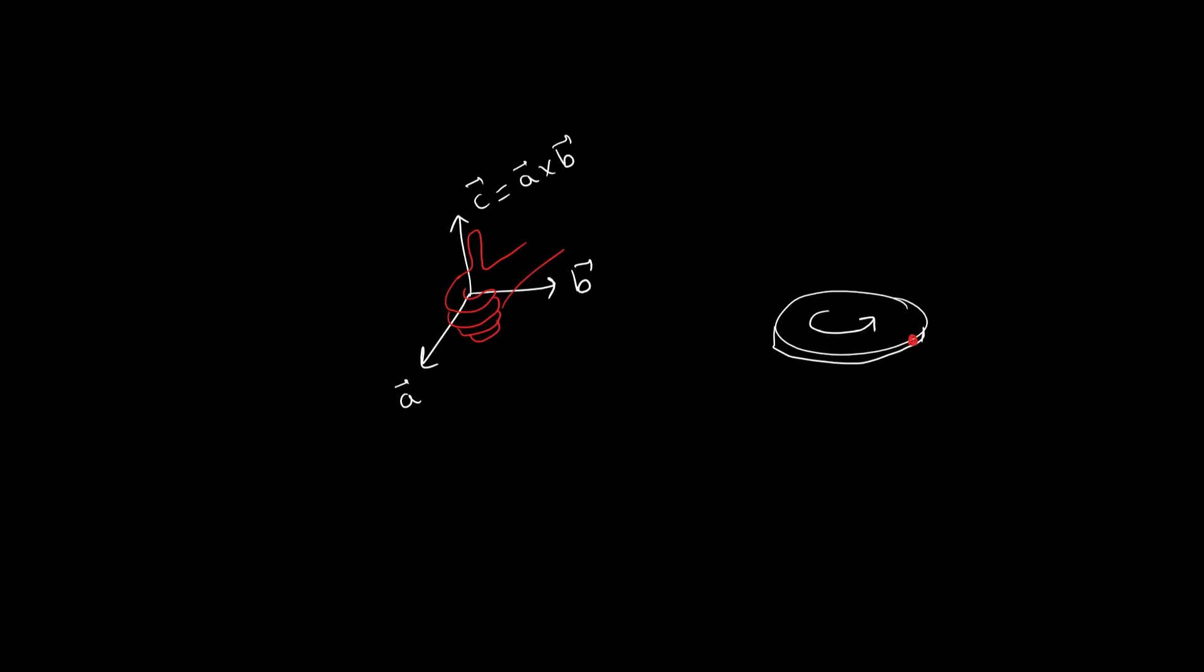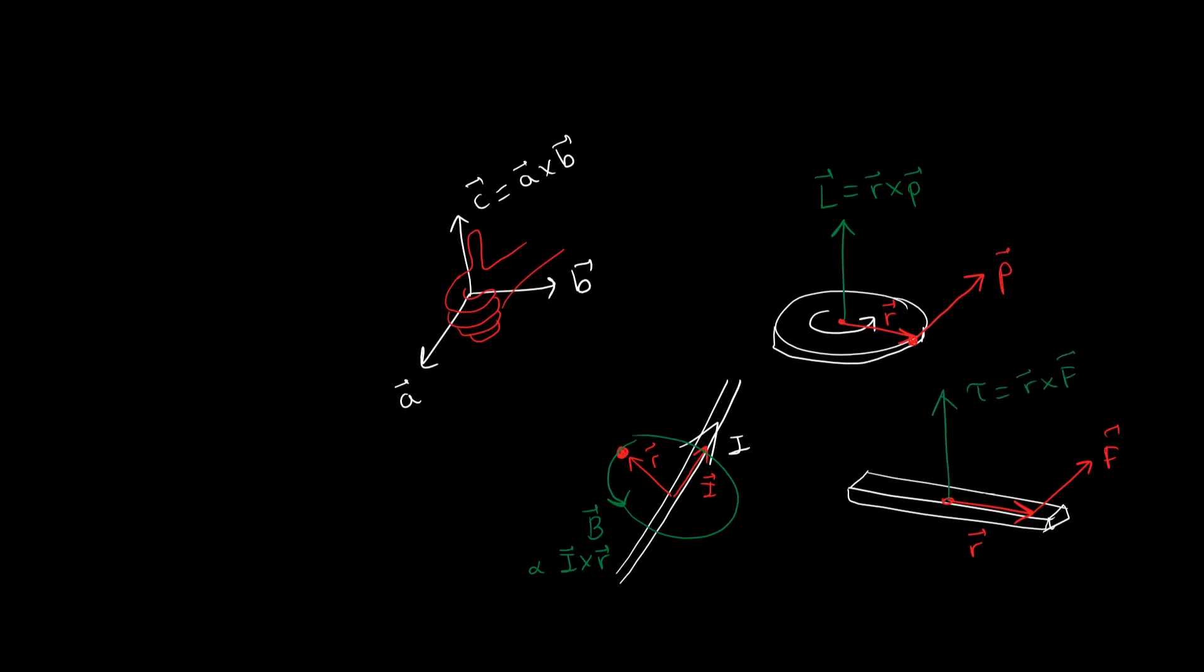the angular momentum vector of a rotating disk, the magnetic field vector created by a current, the torque acting on an object when we apply a force, and so on. All these vectors are calculated using cross products and therefore their orientation is determined arbitrarily by the right hand rule convention.